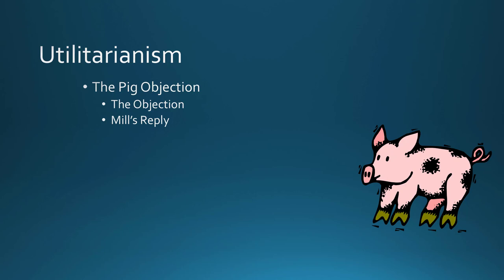He doesn't use an analogy, but an obvious one would be food. We don't just judge food on sheer quantity — we also consider quality. So if we were offered five gallons of unflavored oatmeal versus a really good pizza, unless we're desperate for five gallons of food, we would go with the pizza — higher quality. So what he has to do is distinguish between the quality of pleasures.